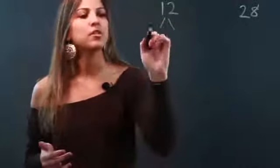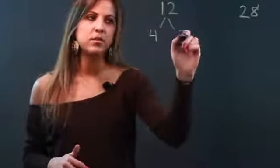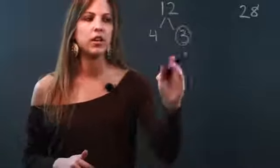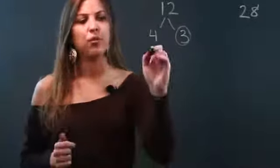And what you want to do is circle any numbers that are prime. So since 3 is prime, I'm going to circle it and know that I'm done breaking it down. I'm going to go to my other tree branch over here, the 4, and break this down.